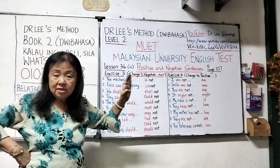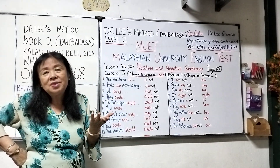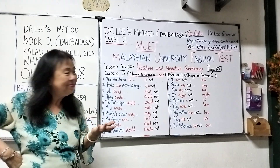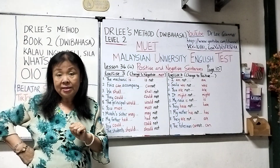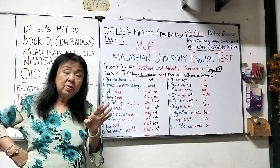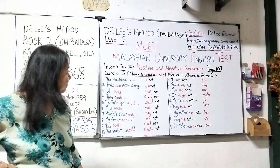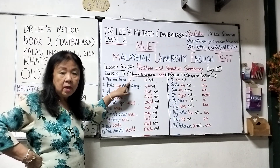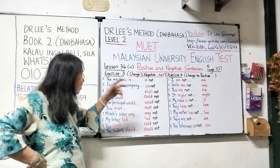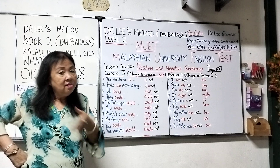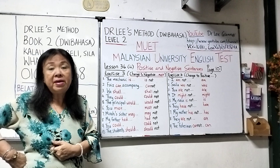Sounds easy, right? If you have this book please turn to page 107. If you don't have a book, just listen. Number one: 'The mechanic is repairing my father's car.' 'Is' is the verb — what do you do? Change to the negative. All you have to do is put 'not' behind the 'is.' So the answer is: 'The mechanic is not repairing my father's car.'